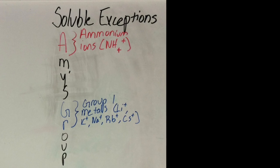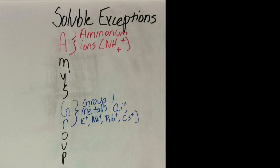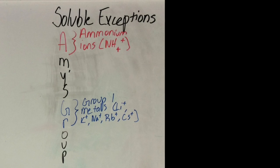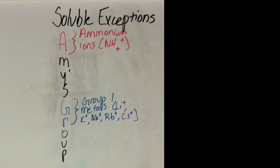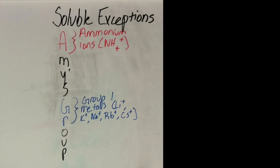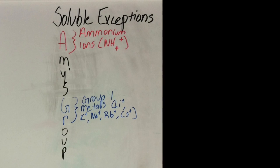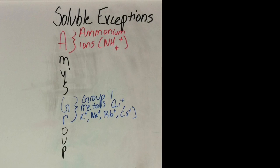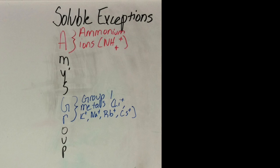Amy's group is the exception. Amy stands for ammonium, which is NH4+, and group refers to the group 1 metal ions, such as lithium, potassium, sodium, rubidium, cesium, all with a plus 1 charge.